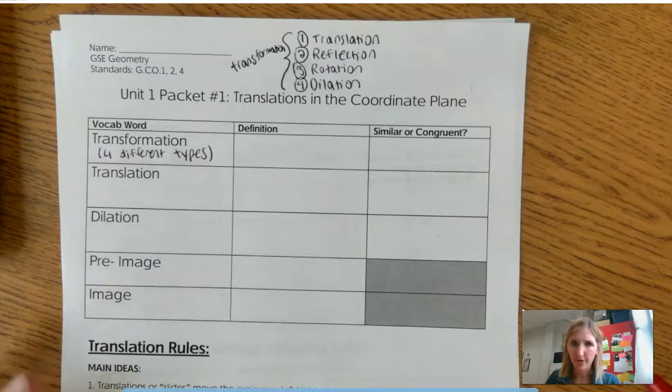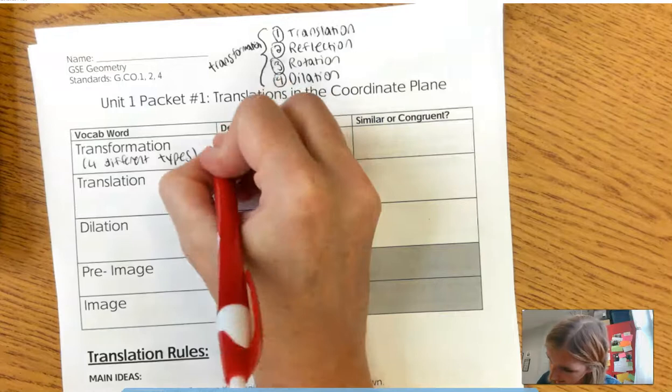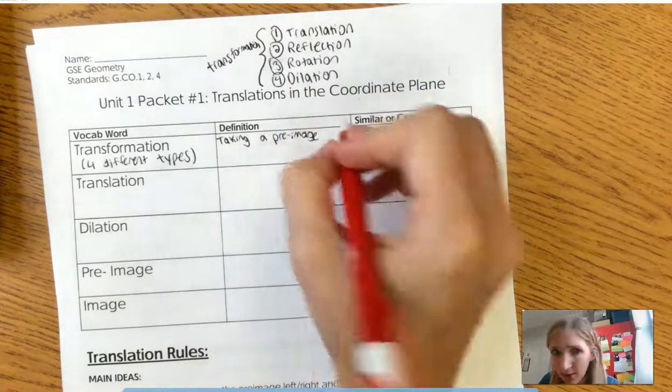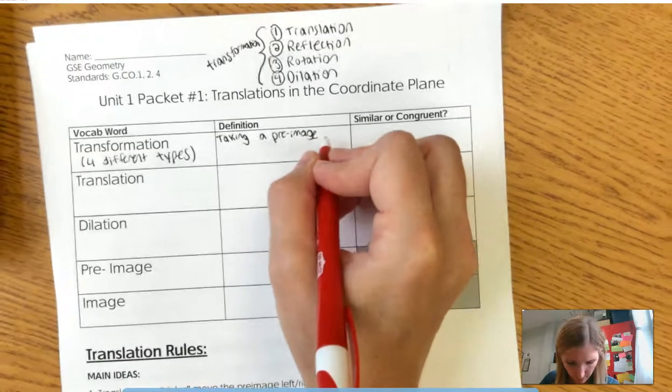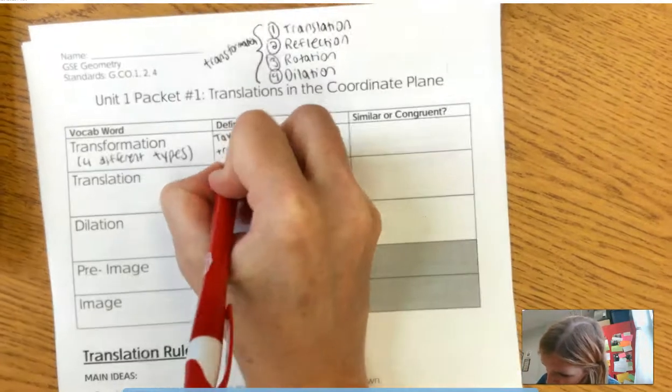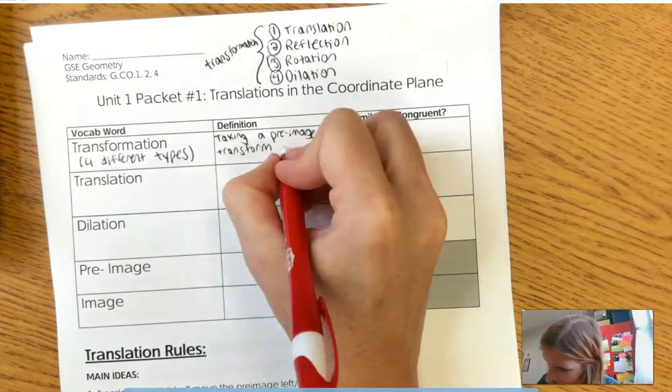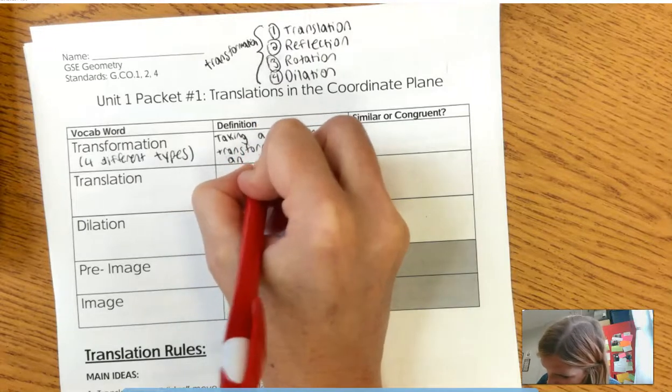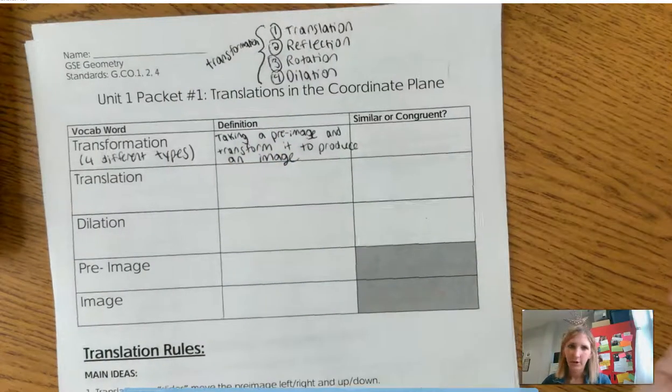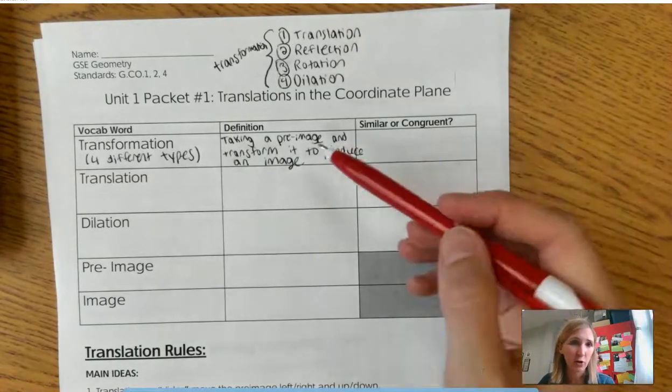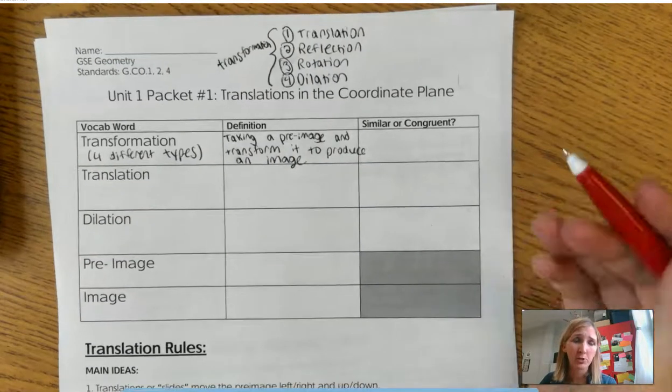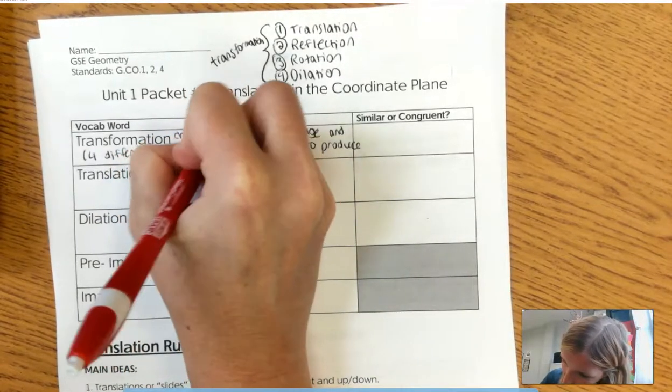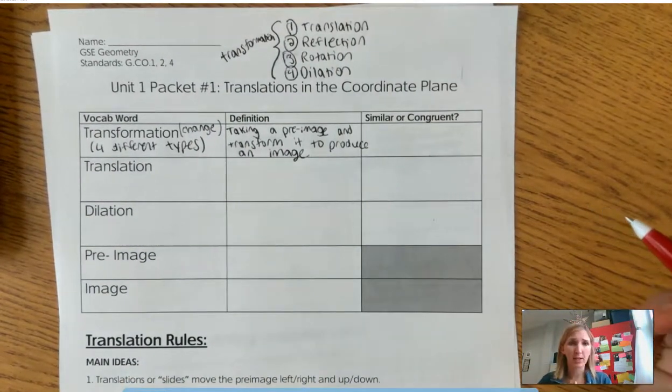Alright. So the official geometric definition of a transformation is taking a pre-image—I know you're thinking, what did you just say? We'll come back to that. So we're going to take a pre-image and transform it to produce an image. Okay, so I know you're thinking that I just cheated completely on this definition because I used the word transform and that's in the word, right?